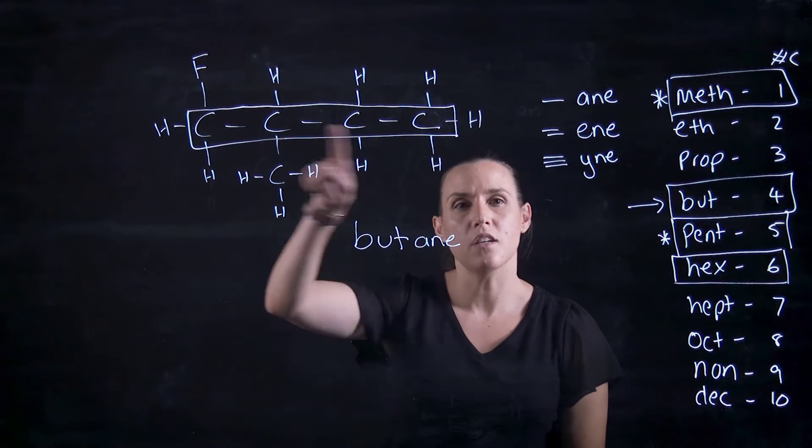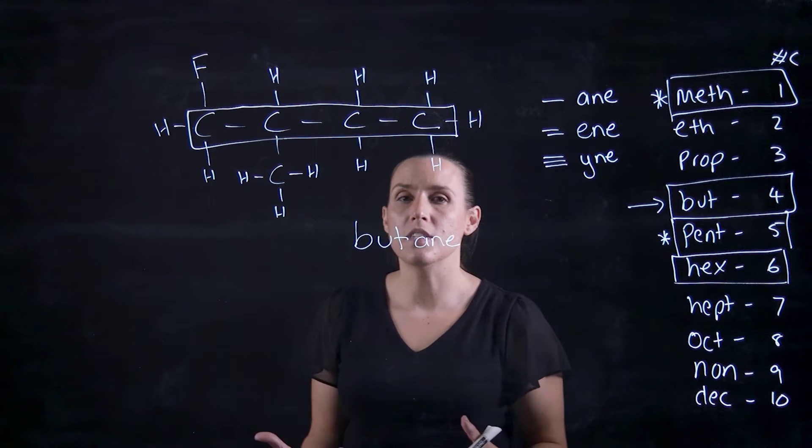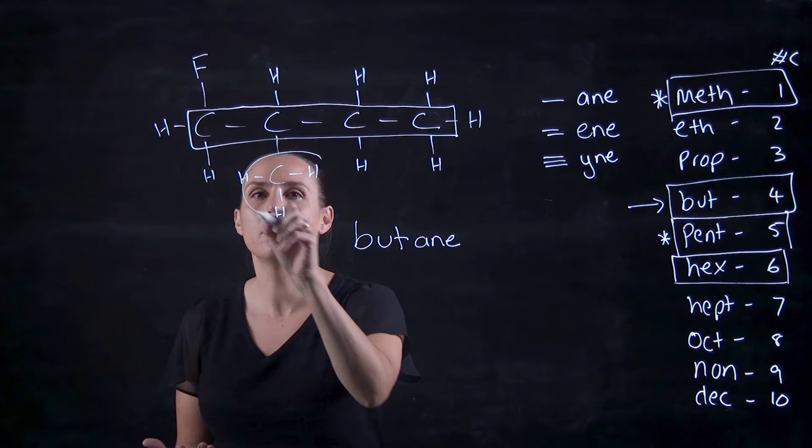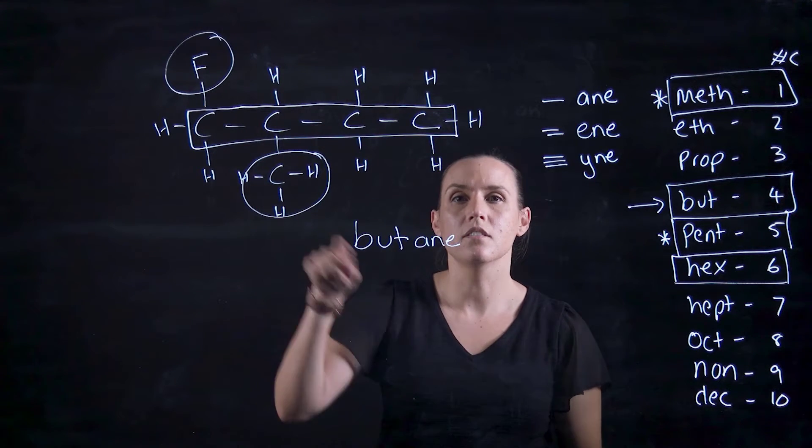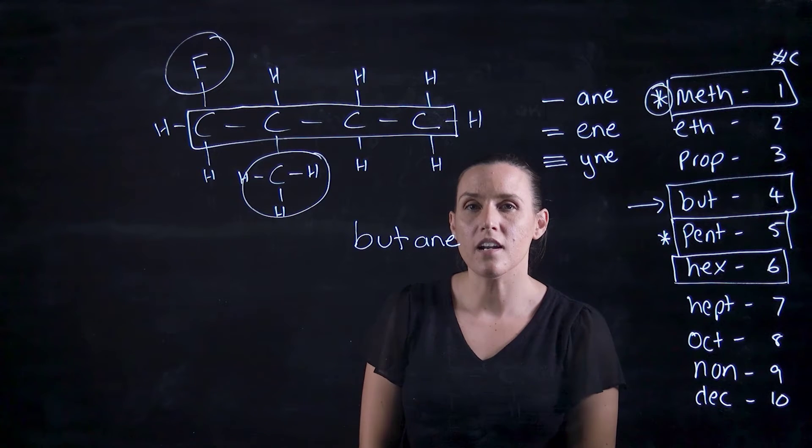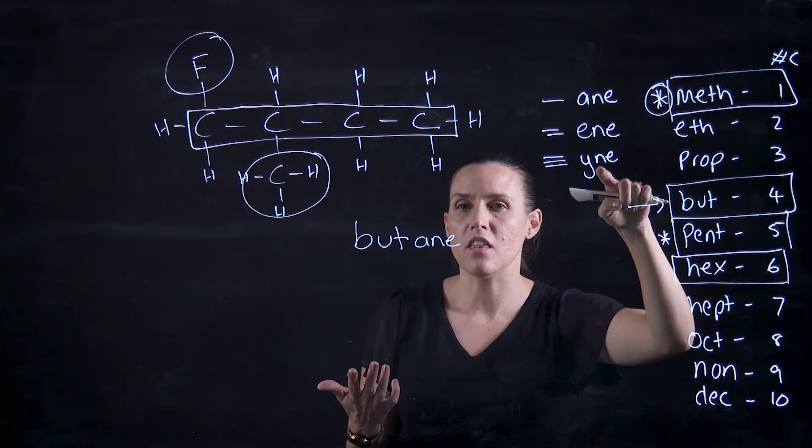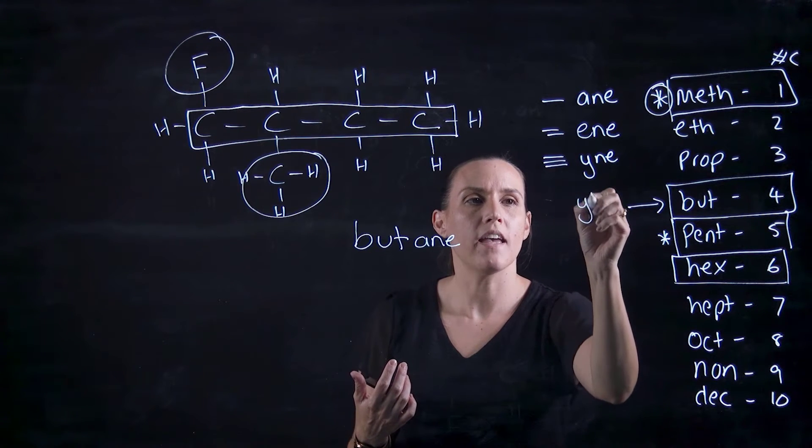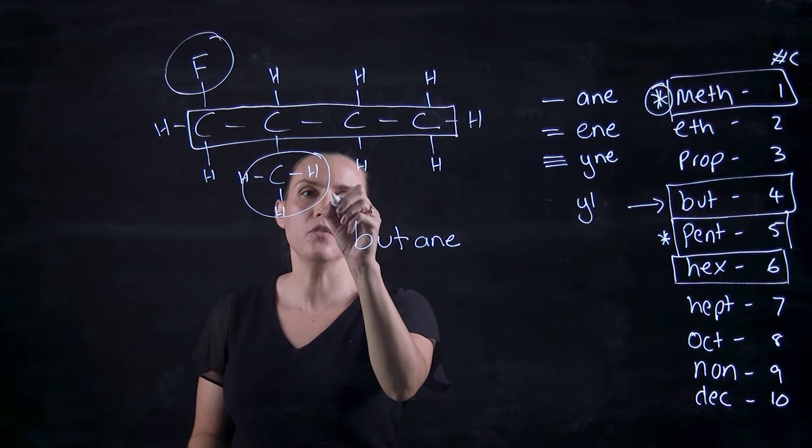And these are all single bonds here. So it's butane. Now looking at the groups that are coming off that main chain. I've got a single carbon, which is a meth. When it's not part of the main chain, I don't need to put methane. I add YL. And this is indicating it's coming off that main chain. So I've got a methyl.